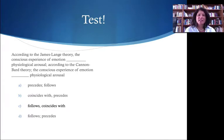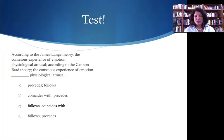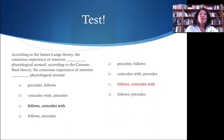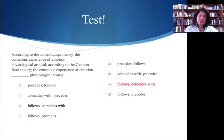Here's a really quick test. According to the James-Lange theory, the conscious experience of an emotion [blank] physiological arousal. And according to the Cannon-Bard theory, the conscious experience of emotion [blank] physiological arousal. Hopefully you're thinking that according to James-Lange, the conscious experience of emotion follows physiological arousal. And according to Cannon-Bard, the conscious experience of emotion coincides with physiological arousal.